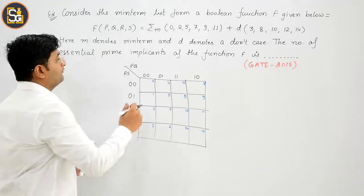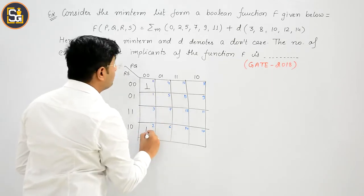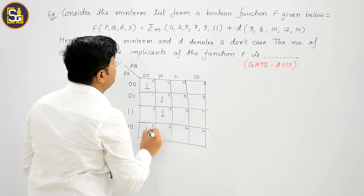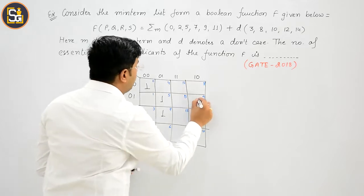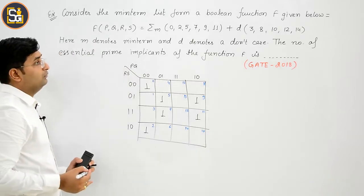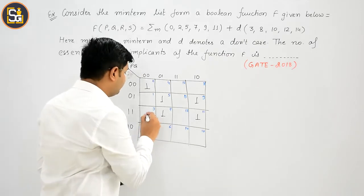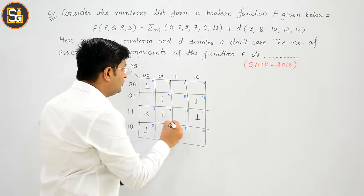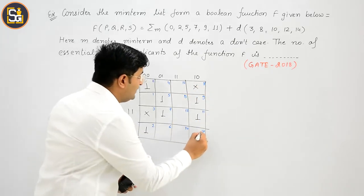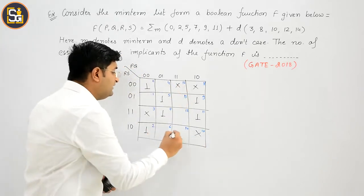Now come to the minterms: 0 is a minterm, 2 is a minterm, 5 is a minterm, 7 is a minterm, 9 is a minterm, and 11 is a minterm. Now, 3 is a don't care, 8 is a don't care, 10 is a don't care, 12 is a don't care, and 14 is a don't care.